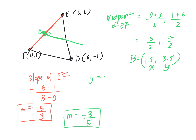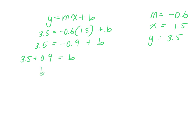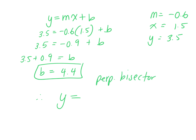We know the slope and a coordinate, so we can find the equation of the green line. Plugging in: y = 3.5, M = −0.6, x = 1.5, so 3.5 = −0.9 + B, giving B = 4.4. Therefore the equation of the second perpendicular bisector is y = −0.6x + 4.4.